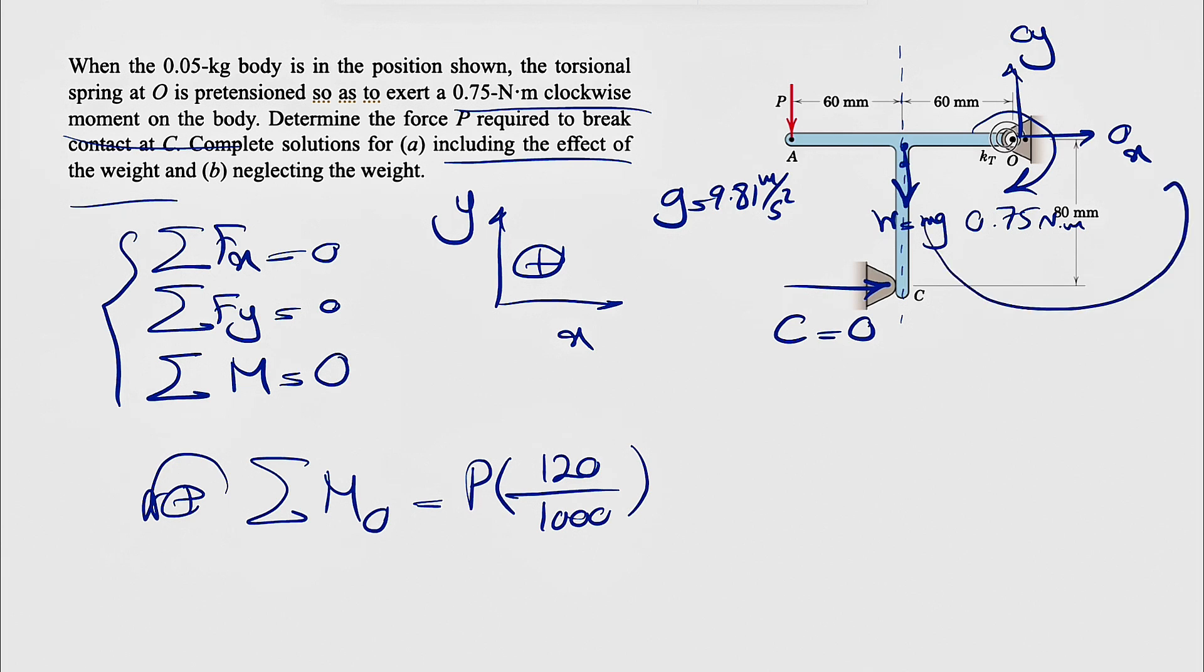We're going to have the moment of the weight, that one's also counterclockwise, so plus mass is 0.05 times 9.81 times distance from here to O, which is half of the top part, or 60 millimeters, again divide by 1,000. And we're going to have the clockwise moment from this spring, so negative 0.75 equals 0.